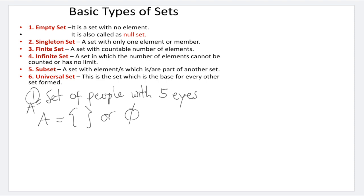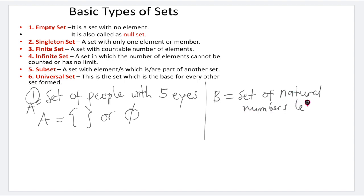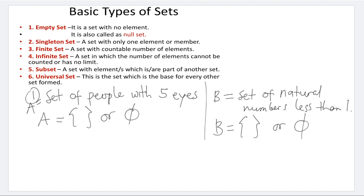Another example of an empty set is set B: the set of natural numbers less than one. Natural numbers are the counting numbers: 1, 2, 3, 4, 5, 6, and so on. There is no natural number less than one, so set B is also an empty set or null set.